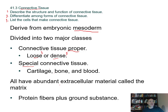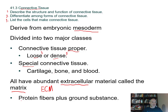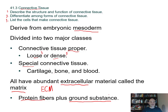Connective tissue cells have a lot of extracellular space between them, unlike the tightly bound epithelial cells. That space is filled with an extracellular matrix (ECM), made by the tissue cells. The ECM consists of protein fibers and a ground substance made of water and other dissolved materials. What makes these tissues different from each other — such as cartilage versus bone — is what's in the ground substance and how much protein fiber is present.